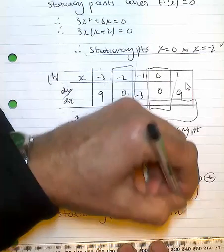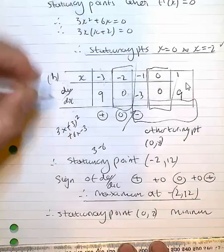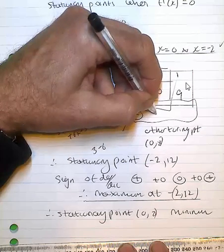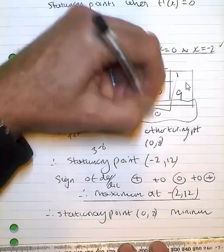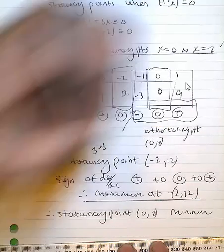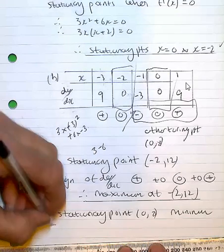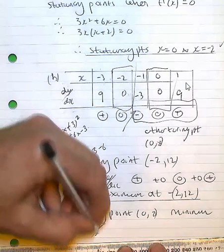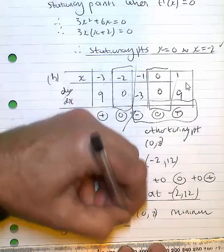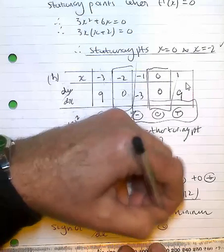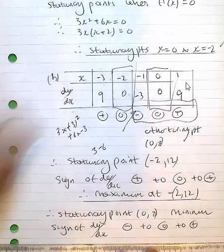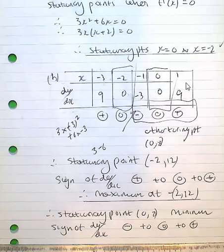That will be a minimum. What happens is we've got a change in sign from negative to 0 to positive. So that really answers C and D as well.